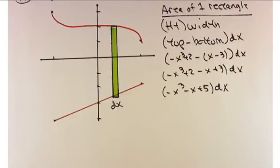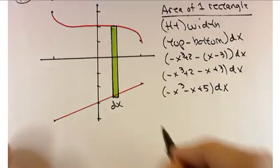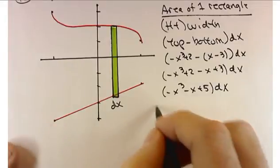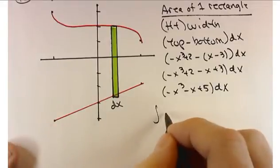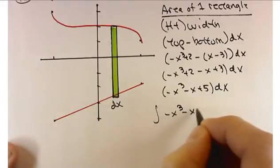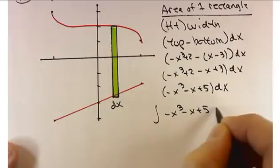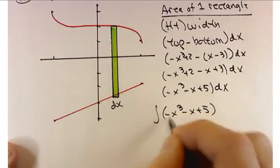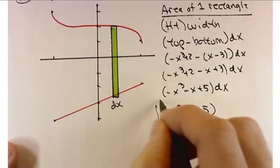So it's minus x cubed plus 2 minus x plus 3, which simplifies to minus x cubed minus x plus 5, dx. Where should I integrate? Between negative 1 and 1.